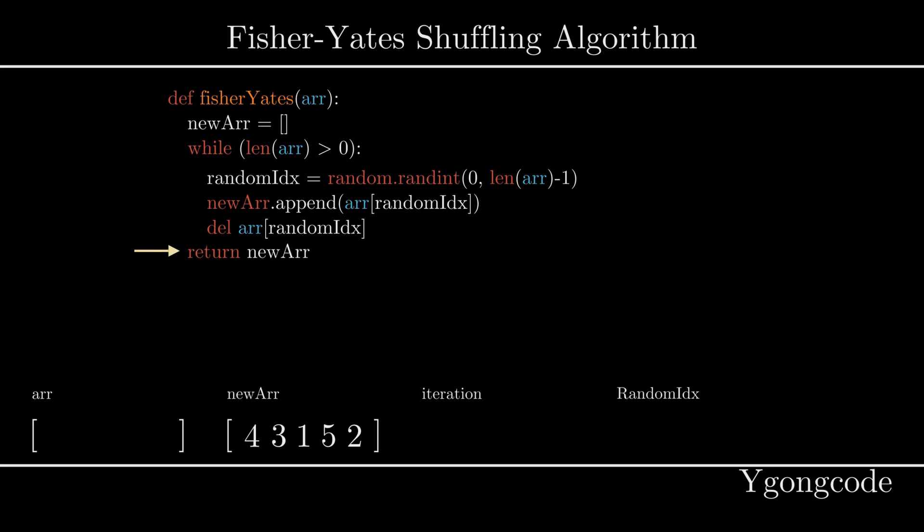Doing so at every iteration means that our algorithm's overall time complexity is going to be O(n^2). The good news is that we can reduce the time complexity down to O(n) by just swapping elements in place.